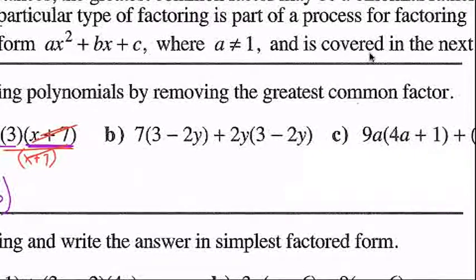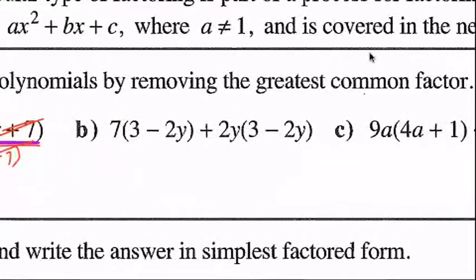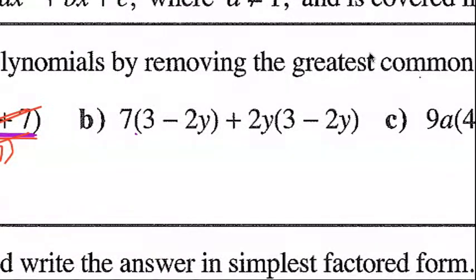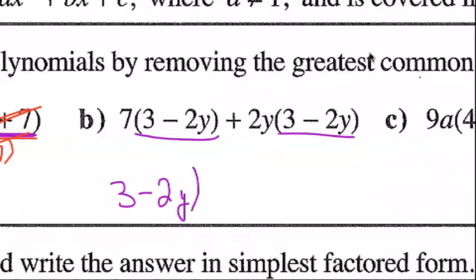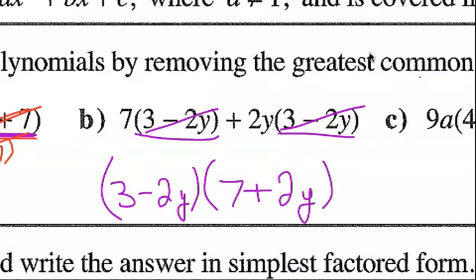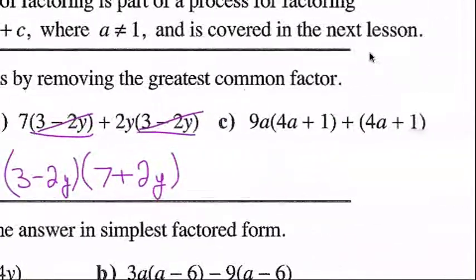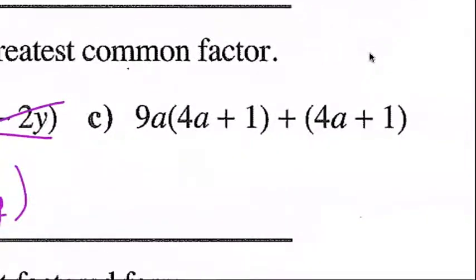For question b, we have 7 times (3 − 2y) plus 2y(3 − 2y). You can see that (3 − 2y) is common between both terms. Factoring out (3 − 2y): divide each term by (3 − 2y) and both cancel, leaving me with 7 + 2y. Done.